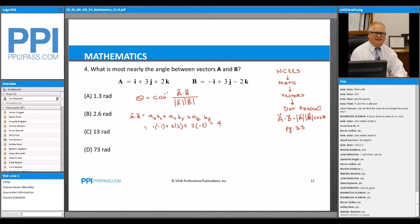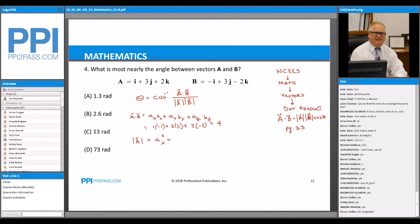Now, what about the length of a vector? Everyone, how do we get the length of a vector? Well, that's ax squared, plus ay squared, plus az squared, square root.